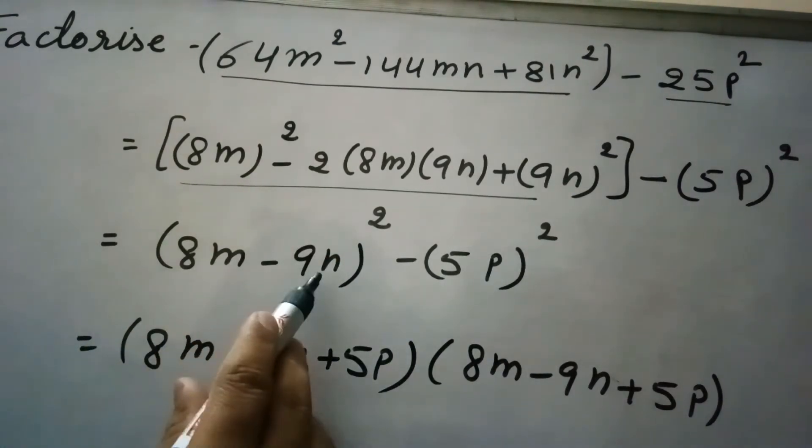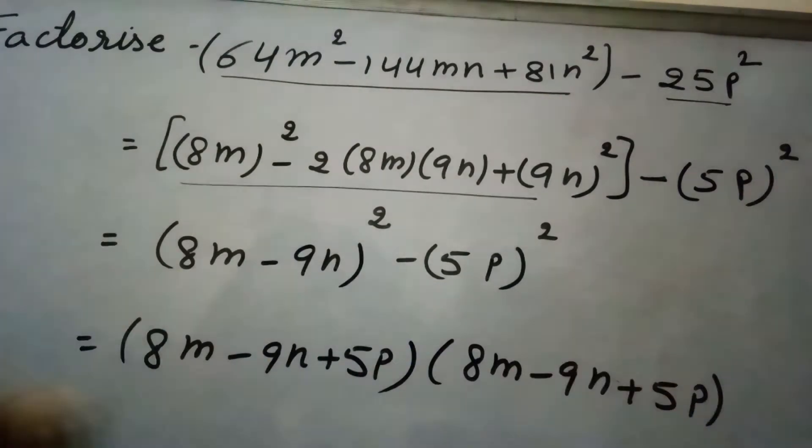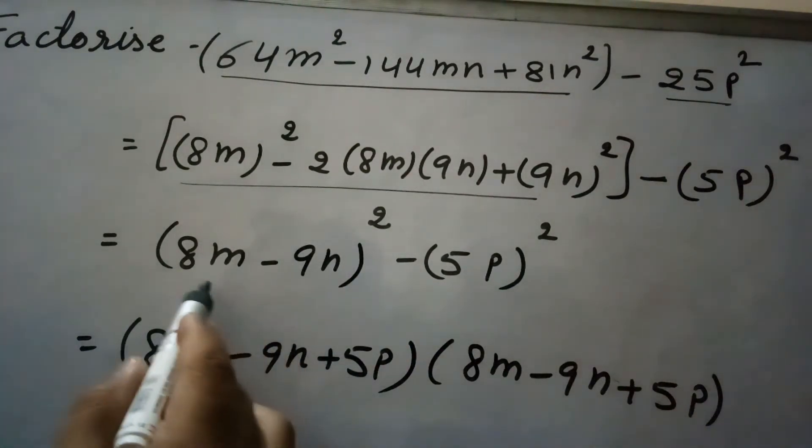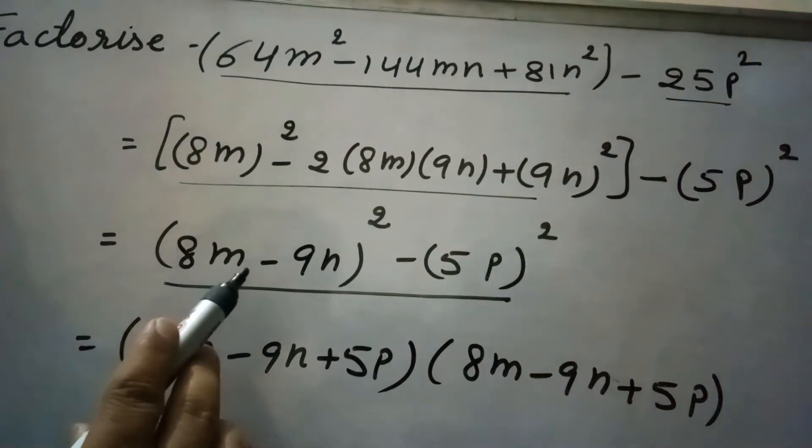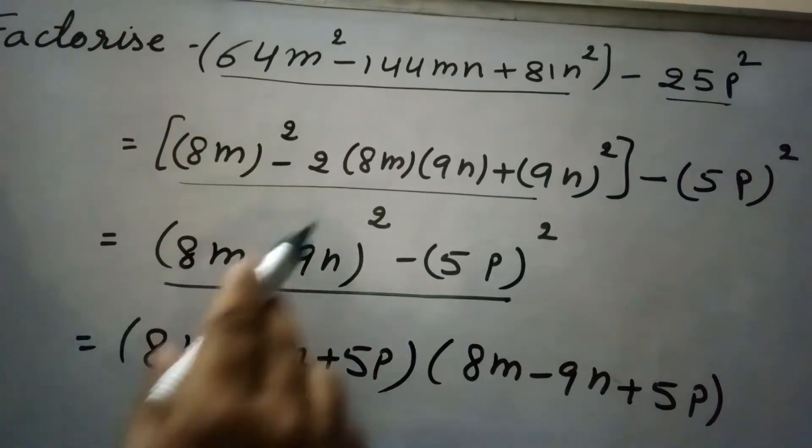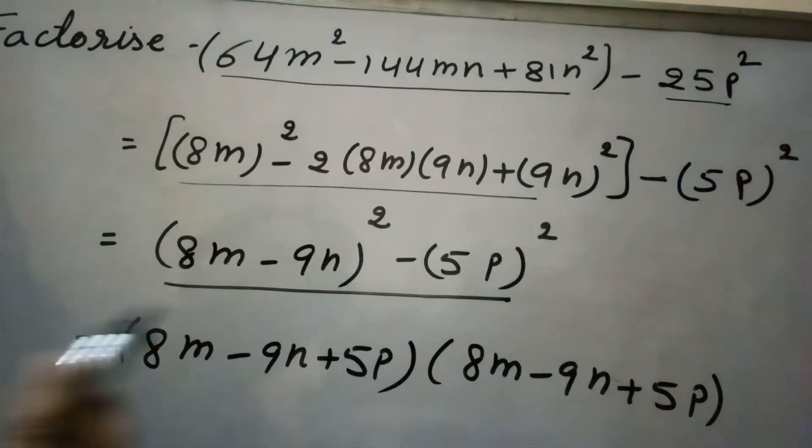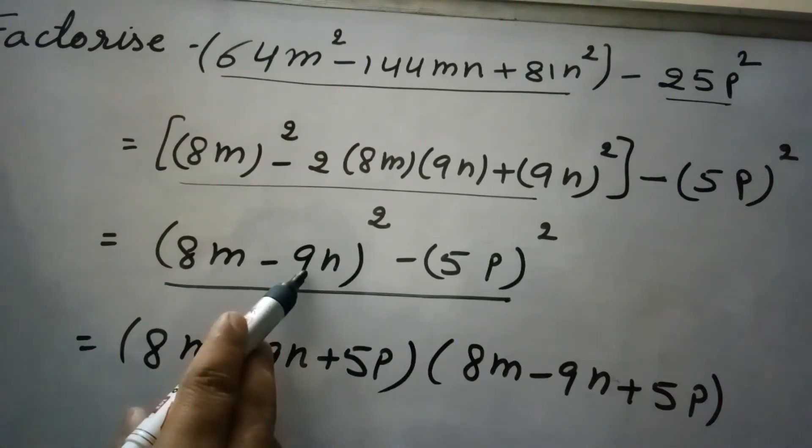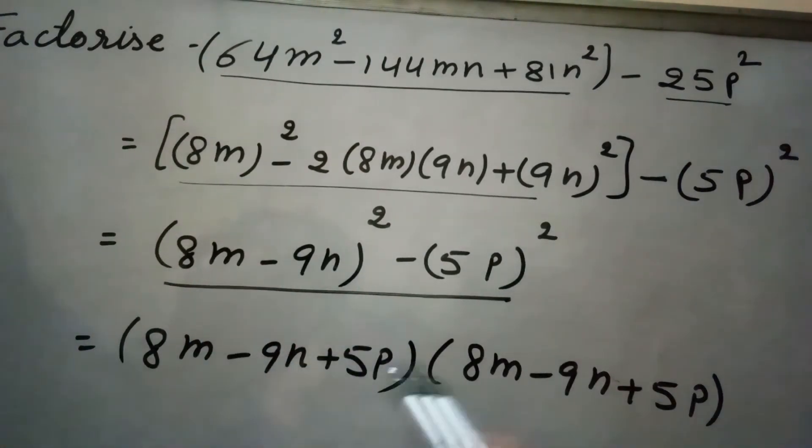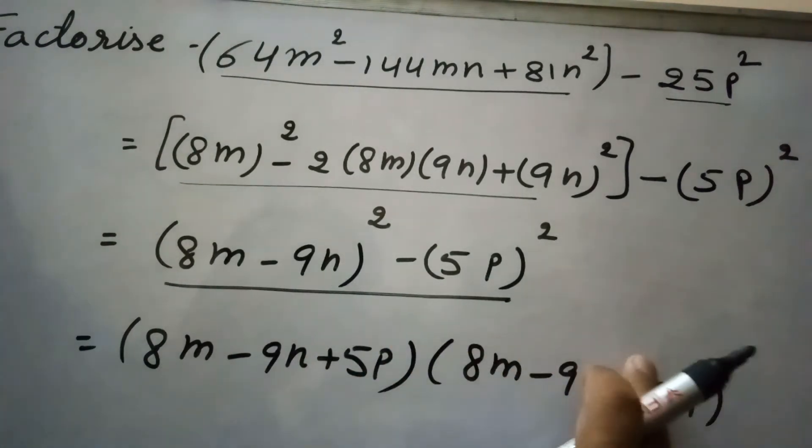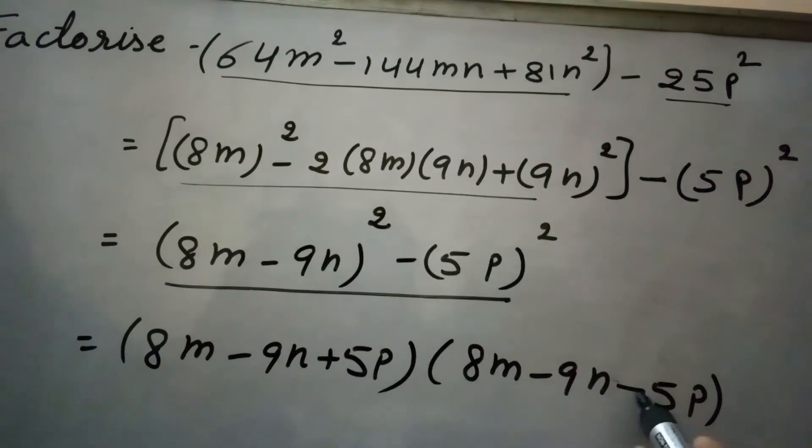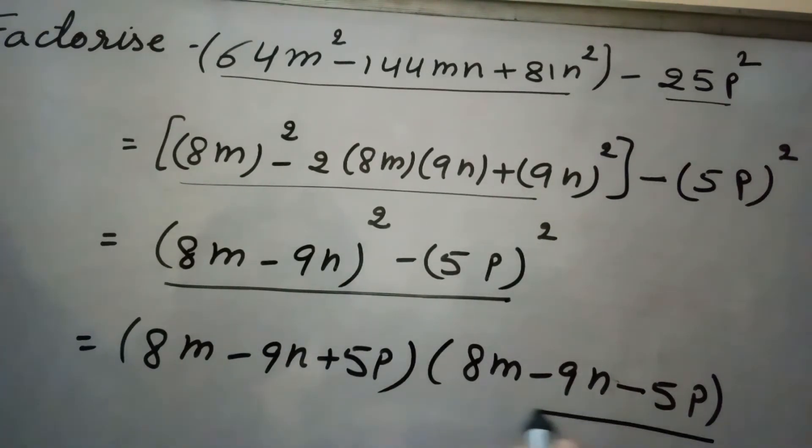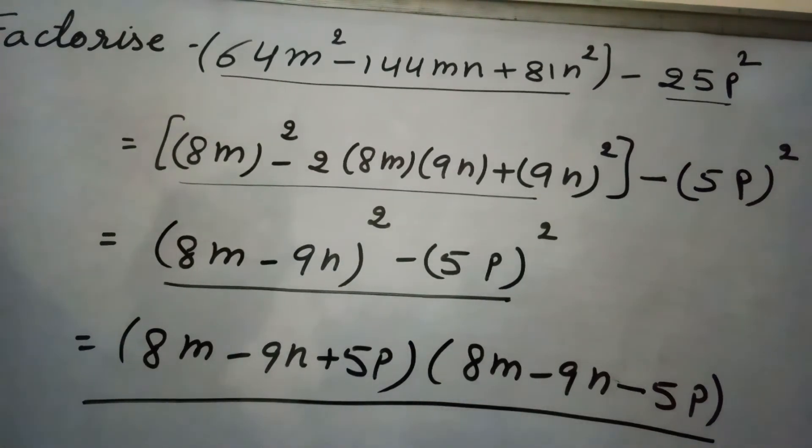Now if you see in this expression, this becomes a² - b², which equals (a + b)(a - b). So this is (8m - 9n + 5p)(8m - 9n - 5p). So these are the factors for this expression.